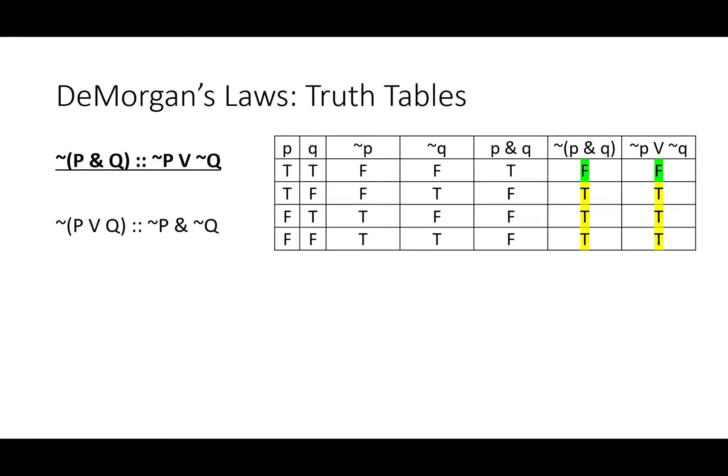We can also use a truth table to see that these are logical equivalents. Looking just at the first line, we see that it's not the case that P and Q has the same truth values as either not P or not Q. Both are false when P and Q are both true, and they're true at all other times.